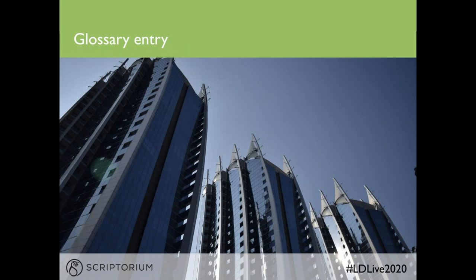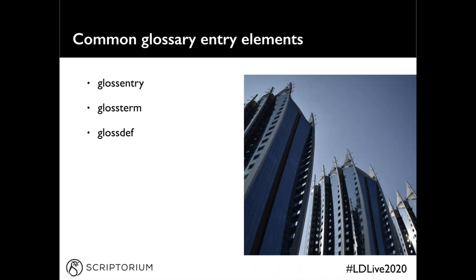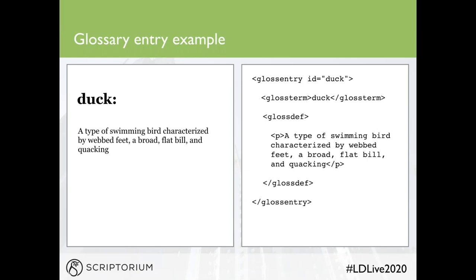A glossary entry defines a single term and answers the question 'what does this mean?' Glossary topics contain a term and a definition. Common glossary elements include: gloss entry (the container), gloss term (the word being defined), and gloss def (the definition). Note that the glossary entry topic has no title element — the gloss term is actually a specialization of the title element. Here's an example: a gloss entry element containing gloss term 'duck,' and then gloss def containing a single paragraph describing what a duck is.